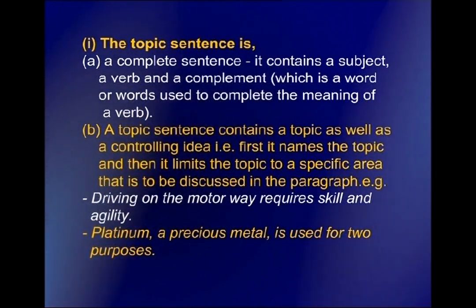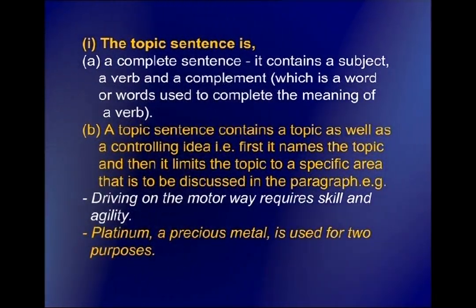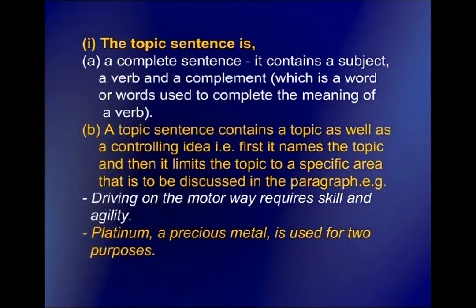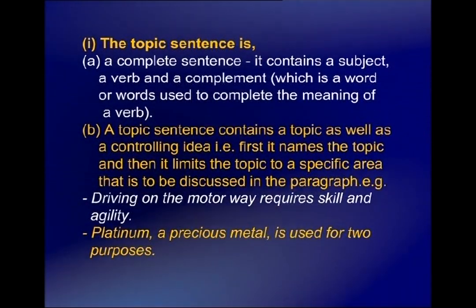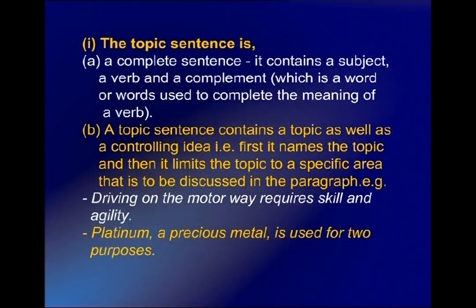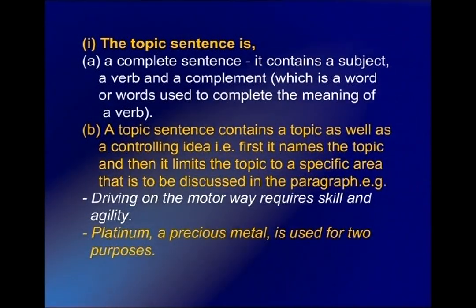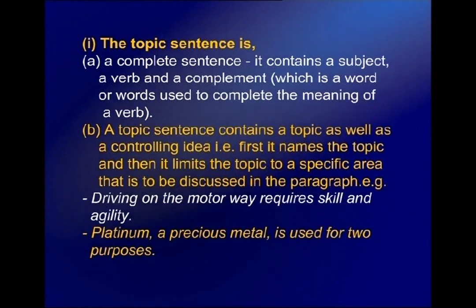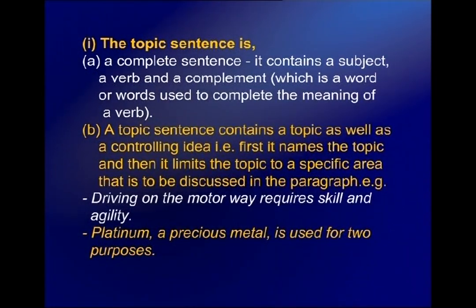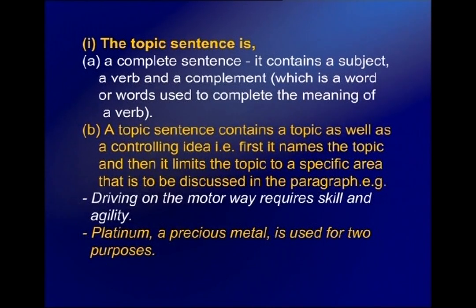A topic sentence is a complete sentence — it contains a subject, a verb, and a complement. A complement is a word or group of words used to complete the meaning of a verb. There are two important things about the topic sentence: number one, it must be a complete sentence; and number two, it contains a topic as well as a controlling idea. That is, the topic sentence first names the topic and then limits it to a specific area to be discussed in the paragraph.